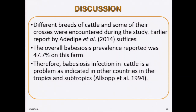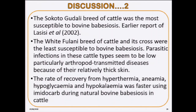We saw that different breeds of cattle and some crosses are prevalent in Nigeria, and the overall prevalence of this condition was 47.7%. Therefore, this condition is a problem in Nigeria. The breed most susceptible is Sokoto Gudali. The White Fulani breed does not seem as susceptible, possibly because of its thicker skin making it harder for the arthropod to penetrate. The rate of recovery from hyperthermia, anemia, hypoglycemia, and hypokalemia was faster using imidocarb during this infection.